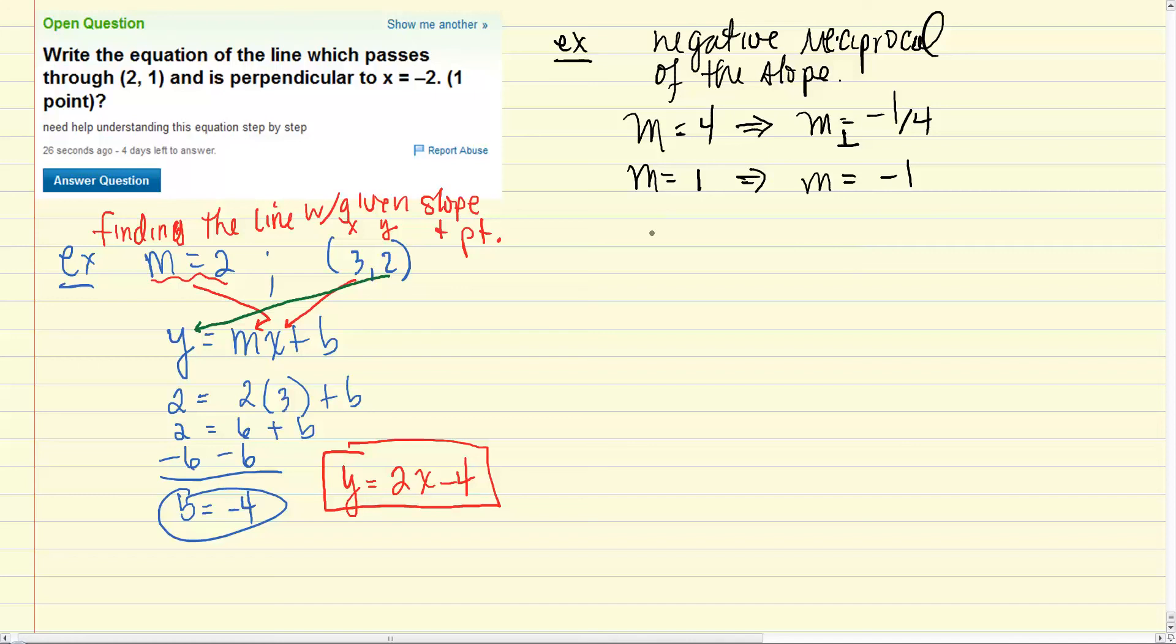In the case of m equals 0 which is what we have in this case, then you'd have m equals negative 1 over 0 which is undefined.